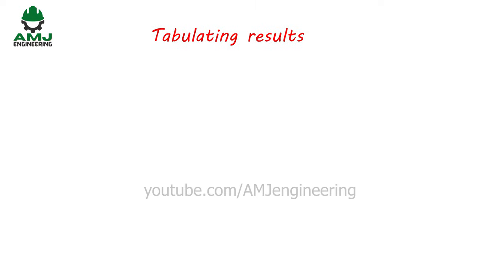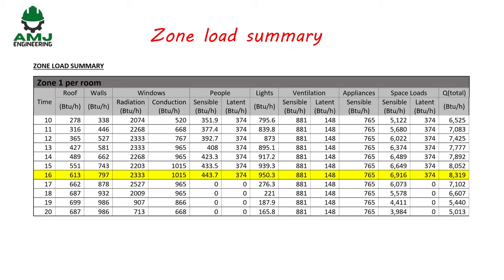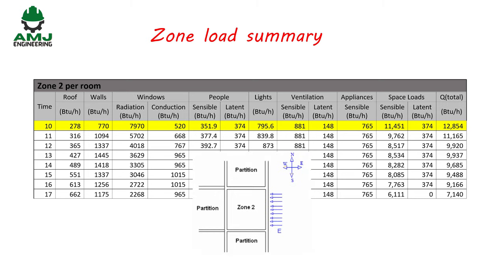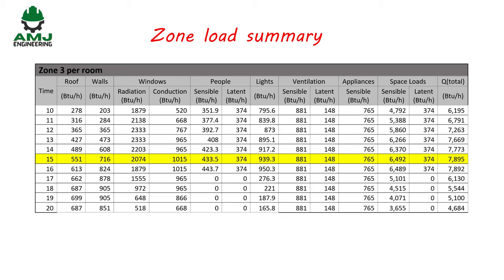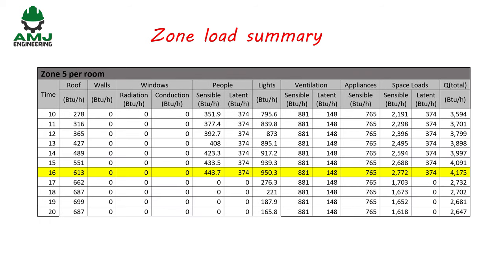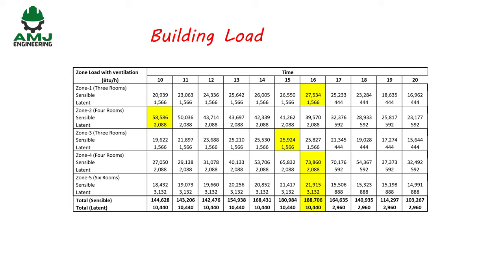Now that all calculations are complete, let us tabulate all results in the zone load summary per room. Zone 1 peak load per room occurs at 4 p.m. at 8,319 BTU/hr. Zone 2 peak occurs at 10 a.m. at 12,854 BTU/hr — logical since east-facing rooms receive maximum solar radiation in the morning. Zone 3 peaks at 3 p.m. at 7,895 BTU/hr. Zone 4 peaks at 4 p.m. at 16,024 BTU/hr. Zone 5 peaks at 4 p.m. at 4,175 BTU/hr.